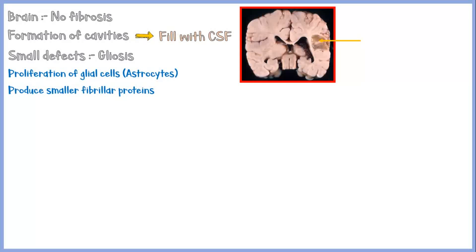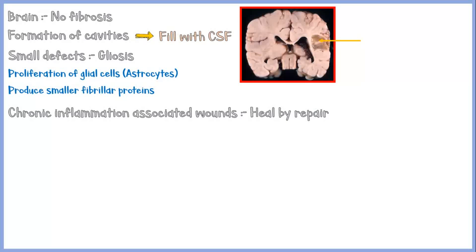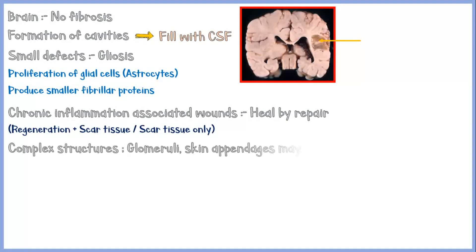In addition to the above discussed instances, chronic inflammation-associated wounds also heal by repair. This is due to the extensive tissue damage caused by chronic inflammation itself. Complex structures like glomeruli, skin appendages like sweat glands and sebaceous glands, and other structures may not be able to be restored, and they undergo fibrosis ultimately.